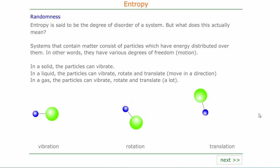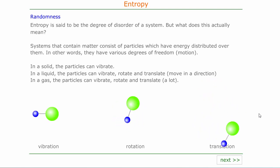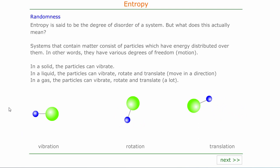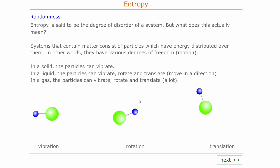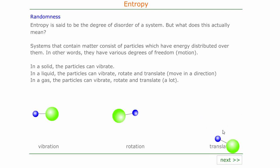We know that matter is made of particles — matter in all of its forms, in solids, liquids and gases. Those particles have energy, and that energy causes the particles to have different forms of motion. In a solid, particles are able to vibrate about fixed positions. In liquids, particles are able to vibrate, rotate, and move around from one place to another with a limited ability — we call that translation. In gases, the particles translate an awful lot; they rotate, vibrate and translate. We call these the degrees of freedom.